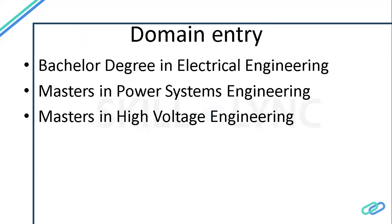At the management level, the roles include power system manager for transmission and distribution. Managers review and oversee project management — whether power flow studies, short circuit studies, designs, or compliance studies done at junior and senior levels — and check the process flow. The recommended educational qualification for this domain is a bachelor's degree in electrical engineering, which can be further specialized with a master's in power systems or high voltage engineering to enter the field.